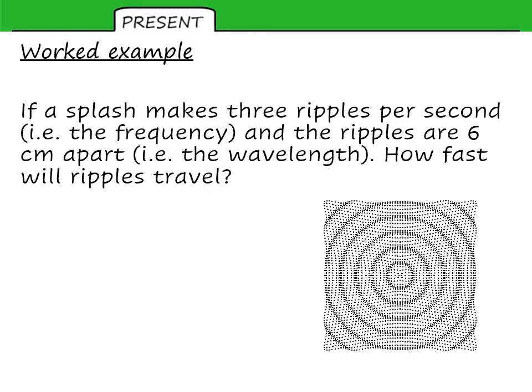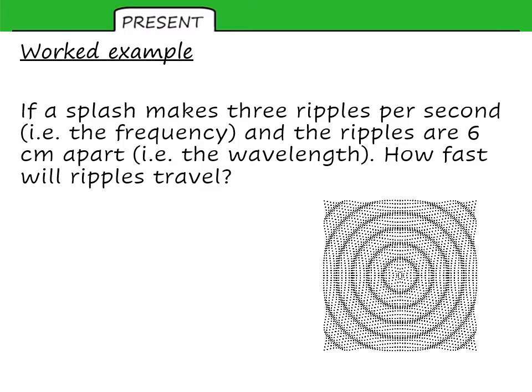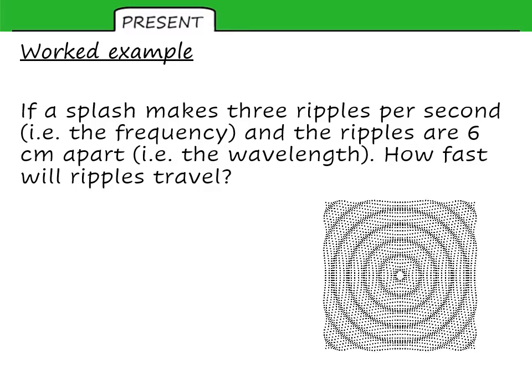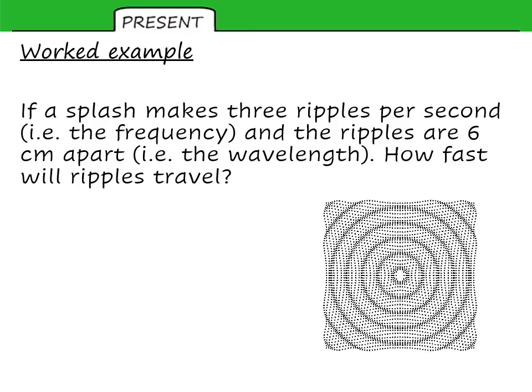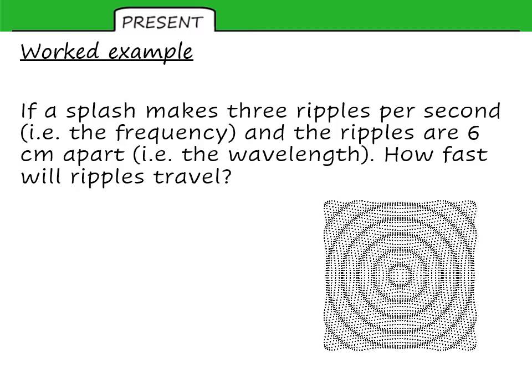So a worked example. If a splash makes three ripples per second, the frequency, and the ripples are six centimeters apart, that is the wavelength, how fast will the ripples travel? So let's get rid of that animation. It's making me dizzy.